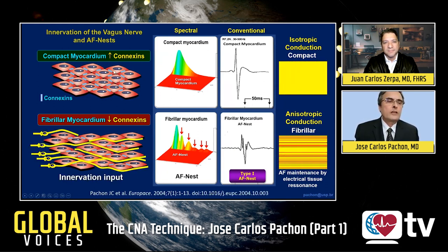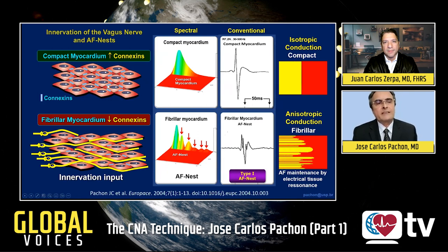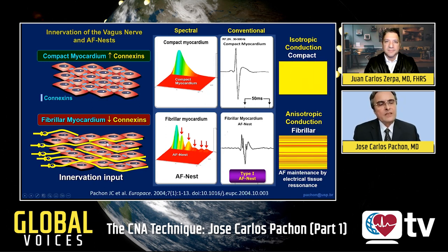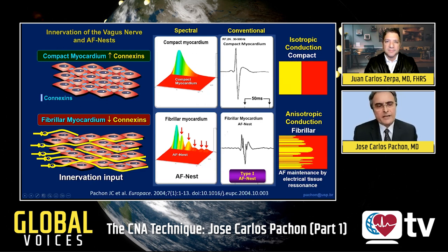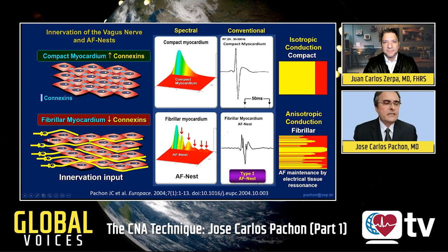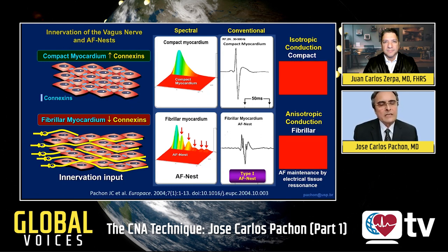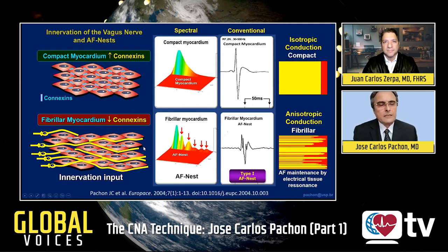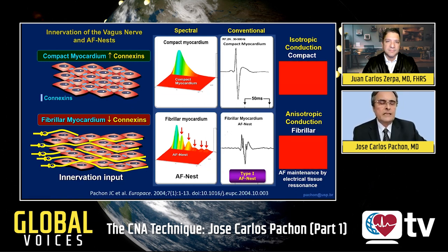The first is the compact myocardium, composed of cells that are electrically very well connected. The second is composed of loosely connected cells — we call this the fibrillar myocardium. We named the clusters of fibrillar myocardium found throughout the atrial wall the 'atrial fibrillation nest,' because it is related to the origin of atrial fibrillation in the normal heart.